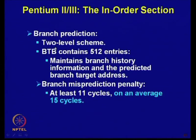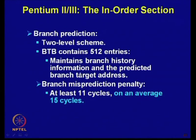The branch prediction unit uses a two-level scheme using a branch prediction buffer containing 512 entries. It maintains branch history information and the predicted branch target address. In the 512 entries, history information as well as the branch target address is stored, allowing very effective branch prediction.